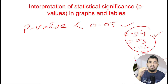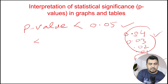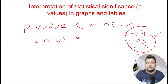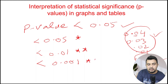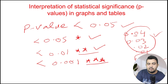There are three levels of significance. If the p-value is less than 0.05, we place a single star. If the value is even smaller — less than 0.01 — we place a double star. And if the p-value is less than 0.001, we place a triple star.